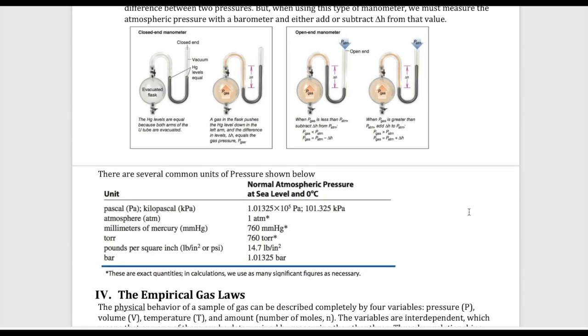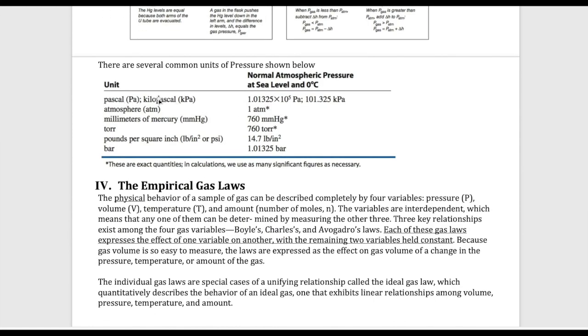Lastly, I just want to point out a few units of pressure. We talked about pascal, kilopascal, millimeters of mercury, and torr. So at sea level, we define the pressure to be one atmosphere. Now one atmosphere is exactly equal to 760 millimeters of mercury; it's exactly equal to 101.325 kilopascal, and so on.